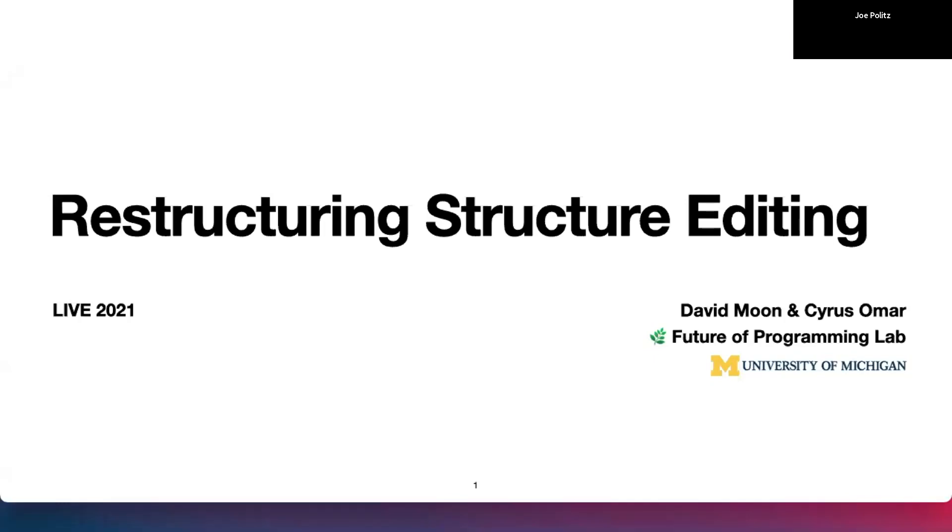All right, so now we have David Moon from the University of Michigan. He's going to show us Tyler, a mechanism for text editing which combines both the affordances of traditional linear editing and structure editing.